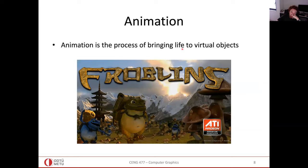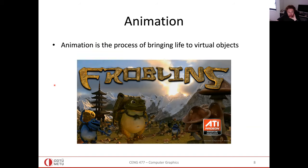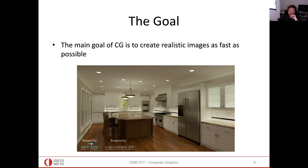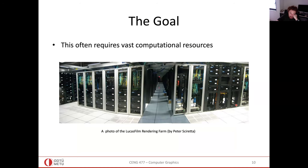Animation is the process of bringing life to virtual objects, as you have seen in Toy Story and similar movies. The goal of computer graphics is to create realistic images as fast as possible. This CG-generated imagery requires serious computation, but it can be done in parallel — the more resources, the faster the output. In this class, we will do ray tracing at a basic level with relatively easier scenes, so a single laptop will be sufficient.